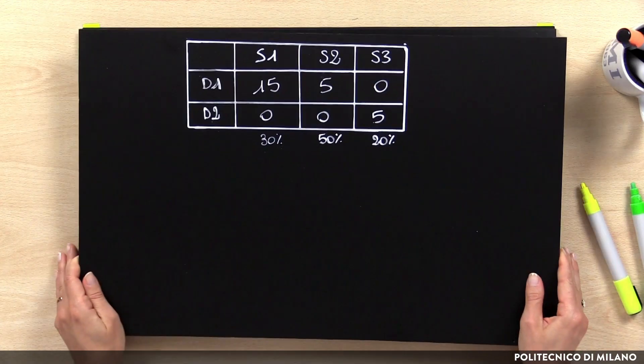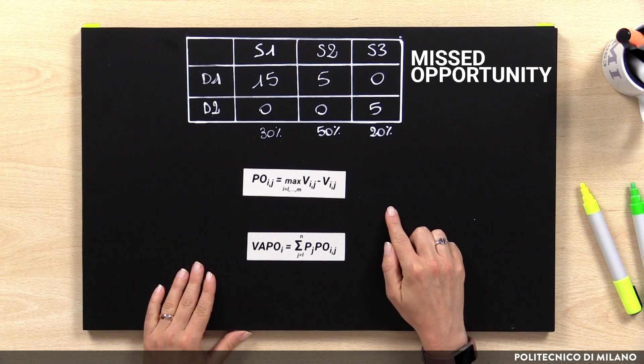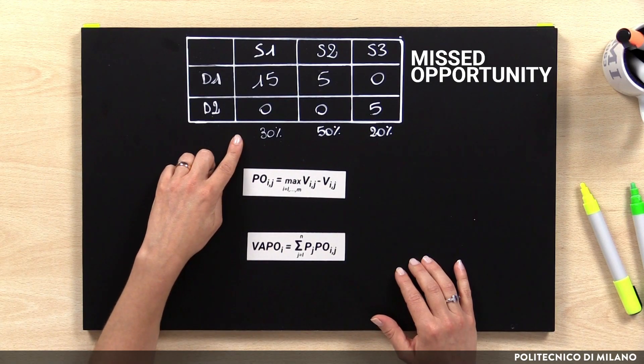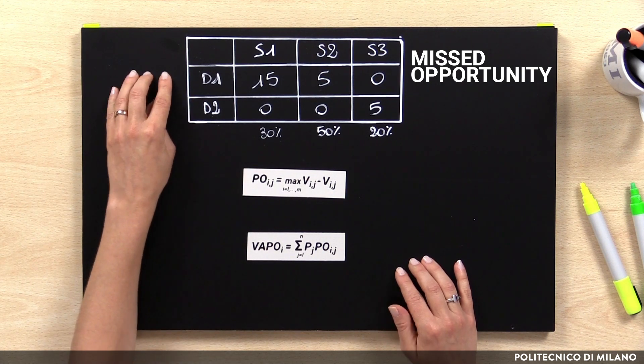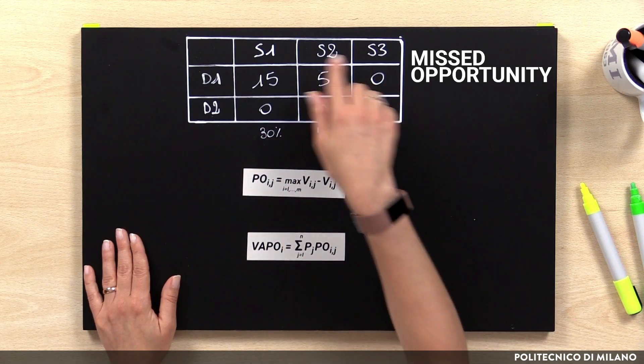An alternative approach to the expected value method is the one called missed opportunity — meaning the value lost when a scenario happens but the decision maker took the wrong decision. For example, if scenario S1 occurs, the best option is D2. If the decision maker selected D1, the missed opportunity is 15, because they obtained 35 rather than 50. Results are generally aligned with those achieved through the expected value method, and the same criteria can be applied. Through this new payoff matrix, decision makers aim at minimizing the expected value of the missed opportunity. This method is typically adopted when the relative result matters more than the overall one, as generally happens in competition with rivals.